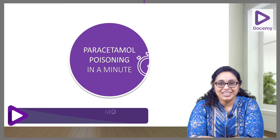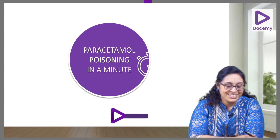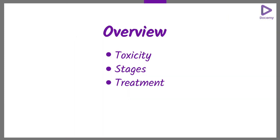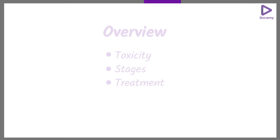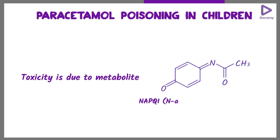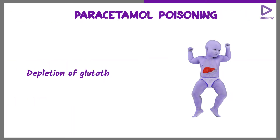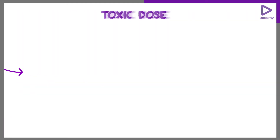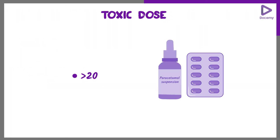All about paracetamol poisoning. The toxicity is due to the metabolite NAPQI, which is N-acetyl-p-benzoquinoneimine. It is mainly due to the depletion of glutathione in the liver. The toxic dose is above 200 milligrams per kilogram.